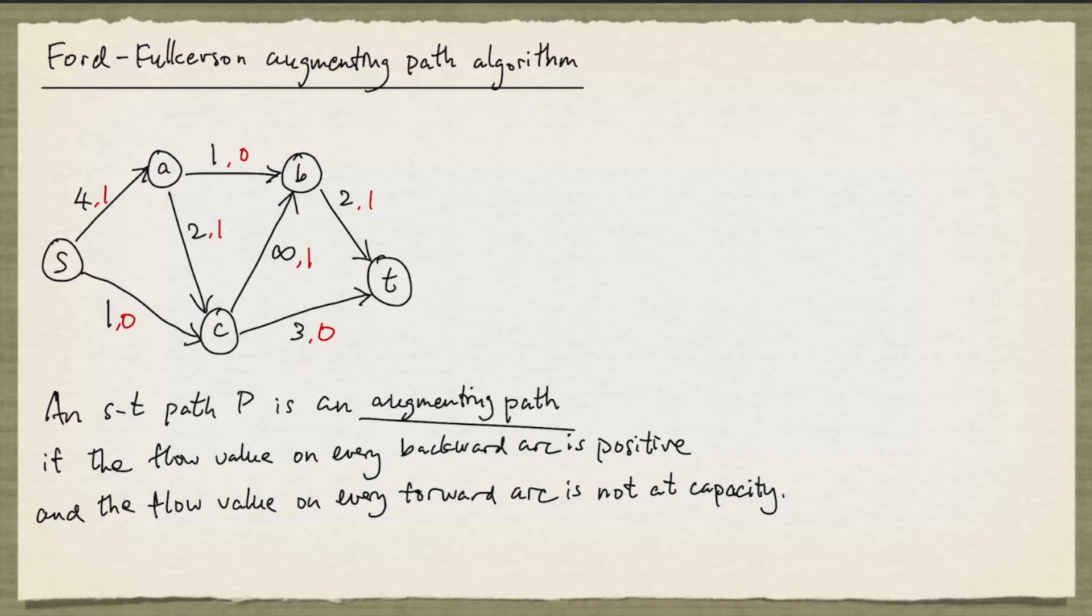Here is an example of an augmenting path. We start from S and go to C, then go to A, then go to B and go to T. SC is going to be a forward arc, and we can see that the flow value is less than the capacity. The arc AC is a backward arc and the flow value is positive. On the arc AB and BT, we have flow values that are less than the capacity. So this is indeed an augmenting path.